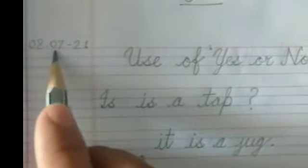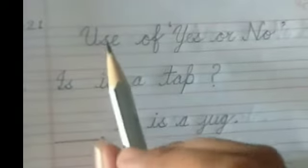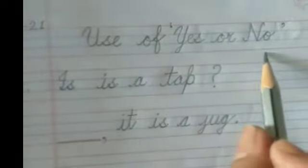Then mention the date. Today is 8-7-2021, 7 means July. Today's heading is use of yes or no.